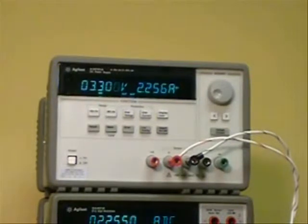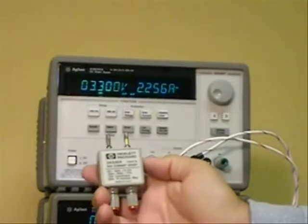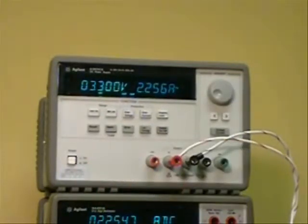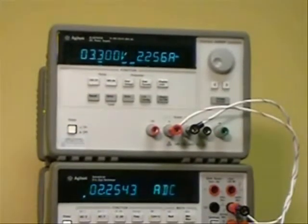Today we're going to talk about using the 34330A low voltage burden current shunt to measure current in a circuit. The reason you'd want to use this current shunt instead of the DMM as shown here is this DMM introduces about a one volt voltage burden to the current measurement.